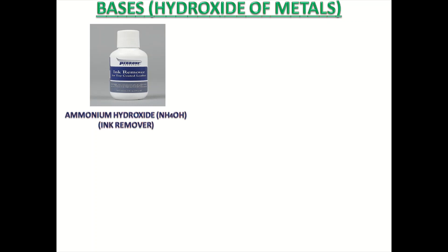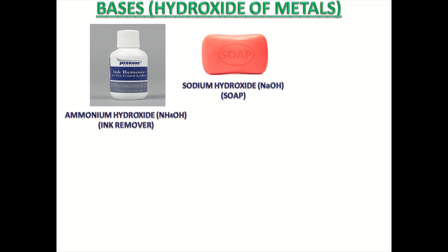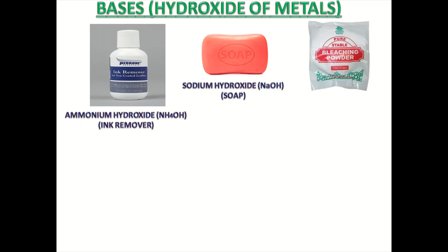This is the ink remover — it has ammonium hydroxide, NH4OH. Second, soap has sodium hydroxide, NaOH. Third is bleaching powder — it has calcium hydroxide, Ca(OH)2.